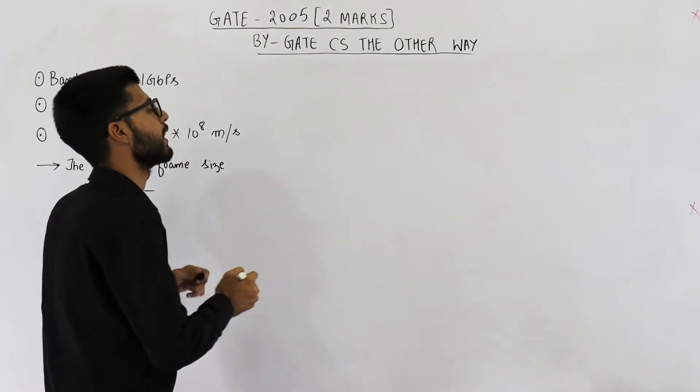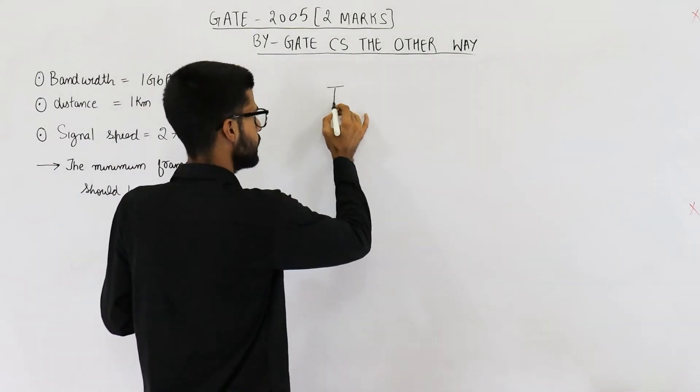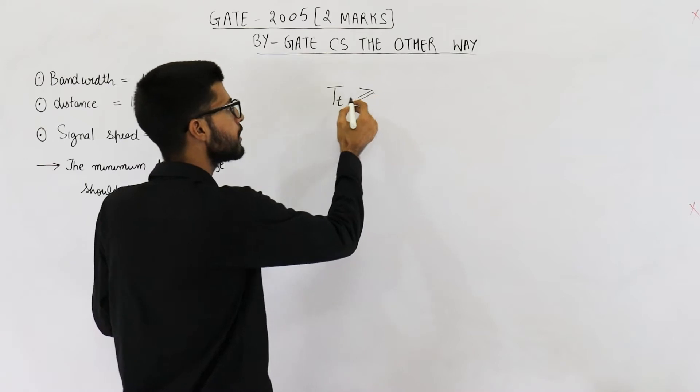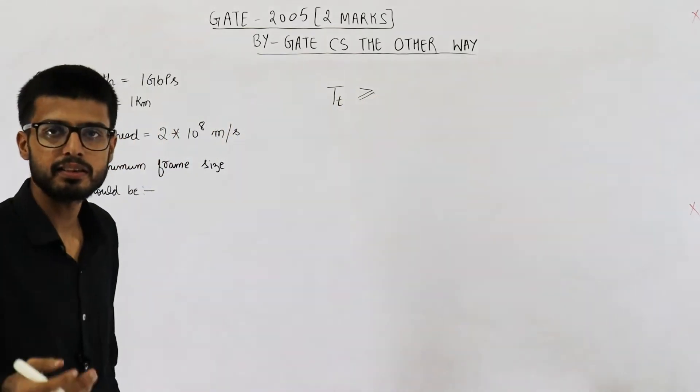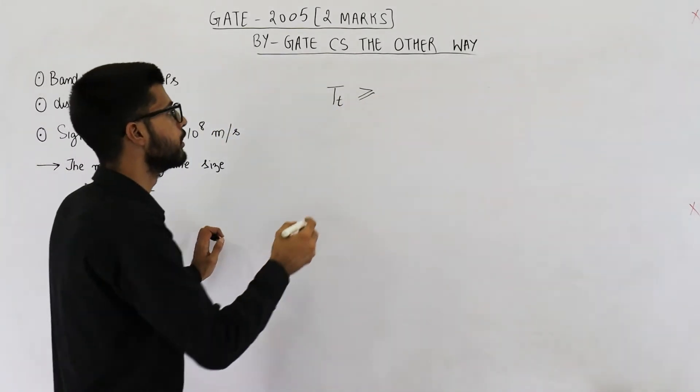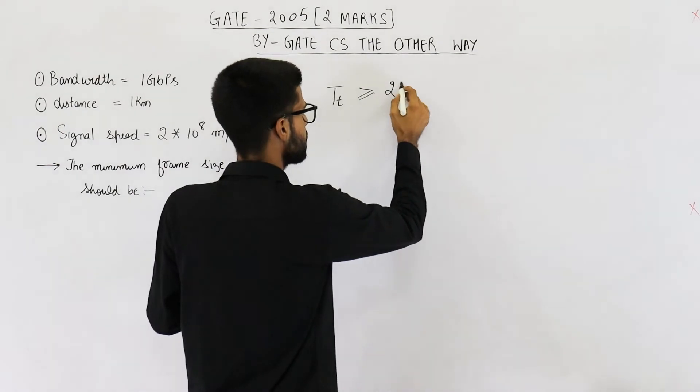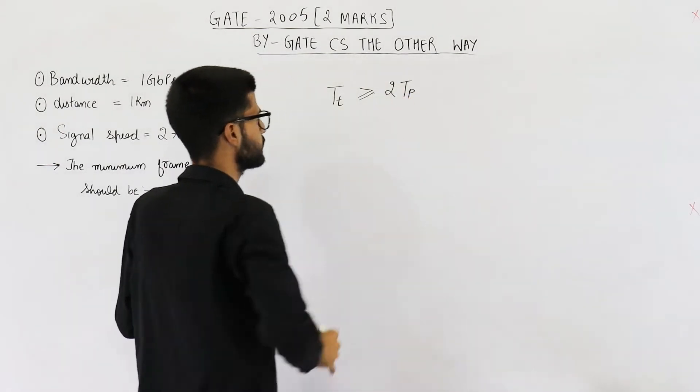Now you all very well know that in CSMA/CD, we want to keep on transmitting for at least 2 into TP time. So transmission time must be greater than twice of propagation delay.